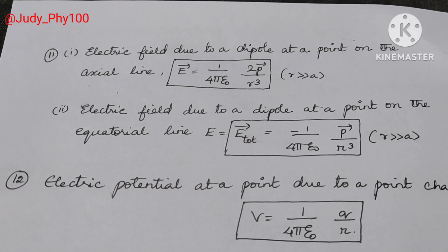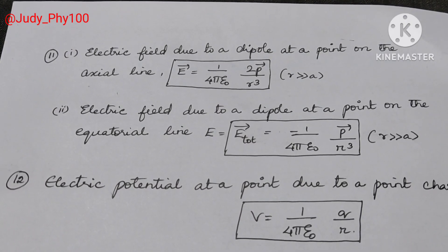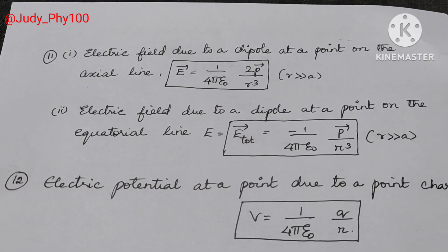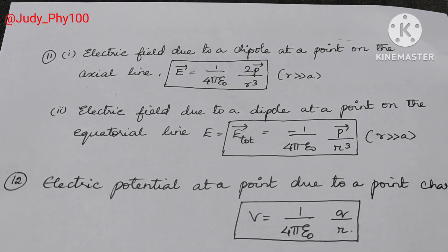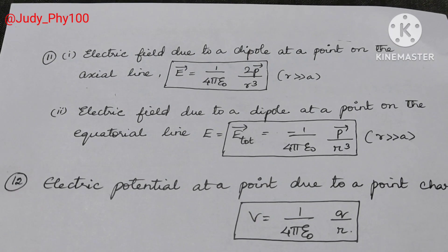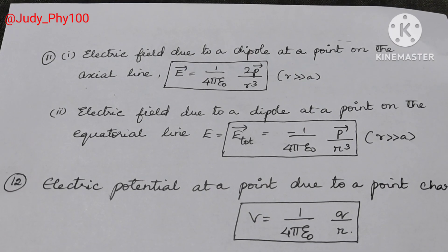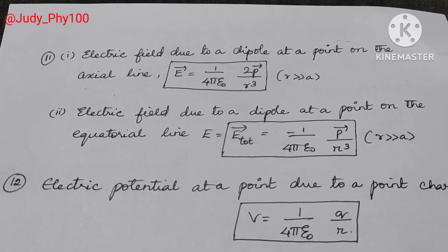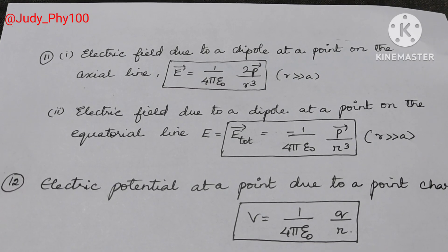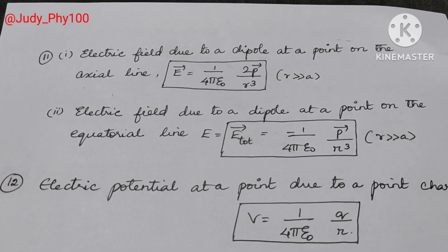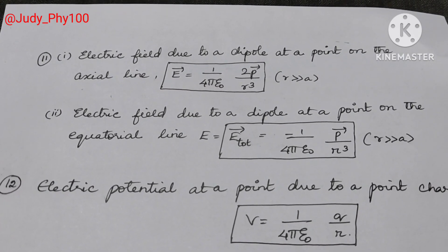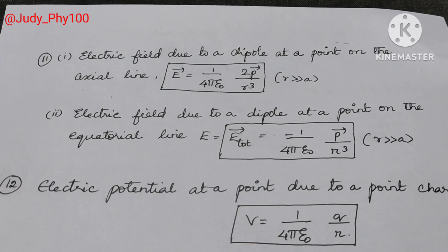Electric field due to a dipole at a point on the axial line: vector E is equal to 1 by 4 pi epsilon naught, into 2p divided by r cubed, where r is very much greater than a.